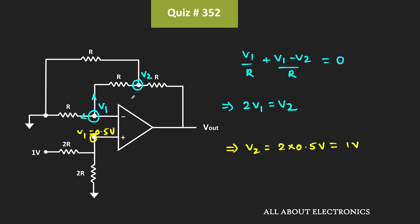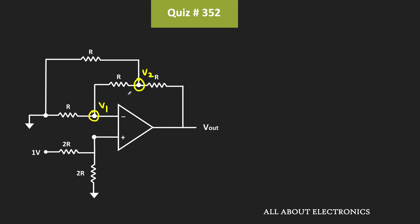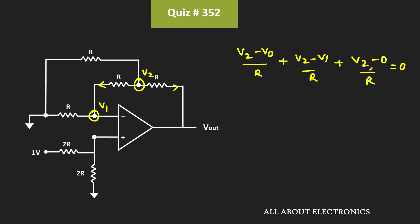Now let's apply the KCL at this node and use it to find the output voltage. Applying KCL at this node, we can write: (V2 − Vout) divided by R — this current — plus (V2 − V1) divided by R — this current — plus (V2 − 0) divided by R — that is equal to 0.